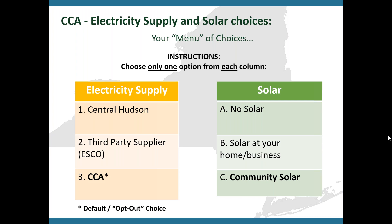One more thing to go through: what makes somebody eligible or not eligible. You would not be eligible if you already have a third-party supplier — you already have a contract with another electrical supplier. Also if you have a block or freeze on your Central Hudson account, if you have a demand meter or use a very large amount of electricity, or a couple of other scenarios — in those cases you would not receive this letter.